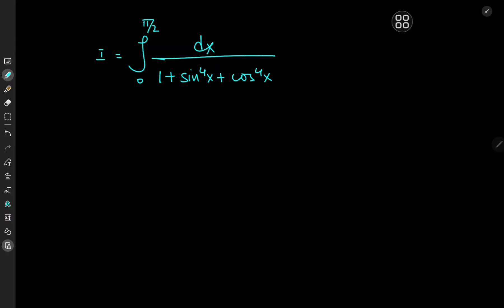Welcome back, this is Kamal once again with yet another very interesting trigonometric integral. We have the integral from 0 to pi by 2 of dx divided by 1 plus sine to the 4th power of x plus cosine to the 4th power of x.